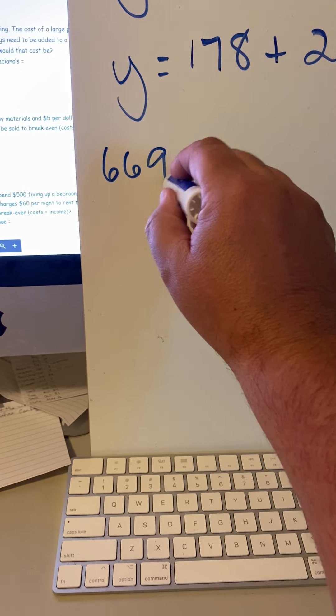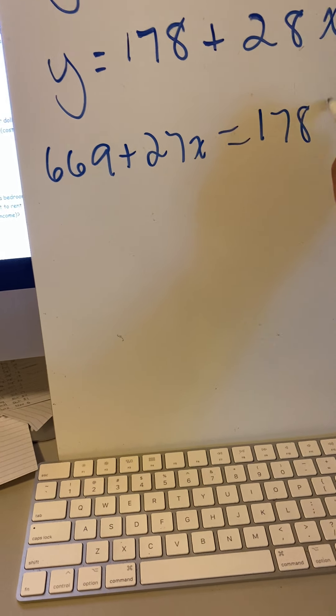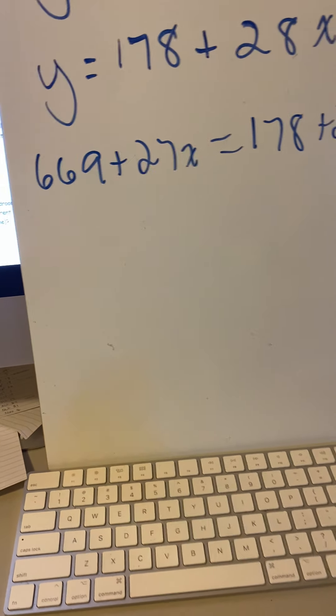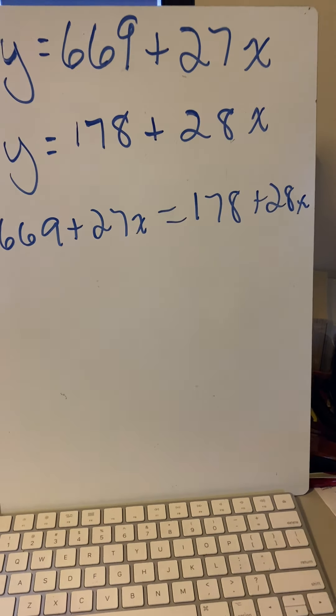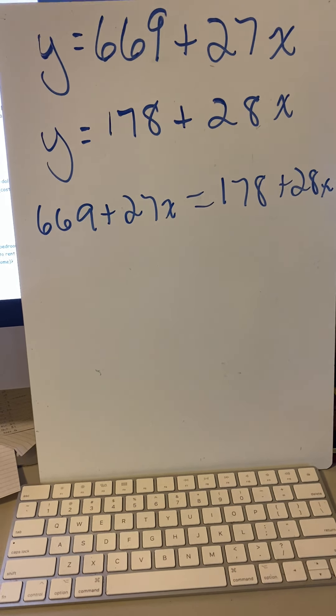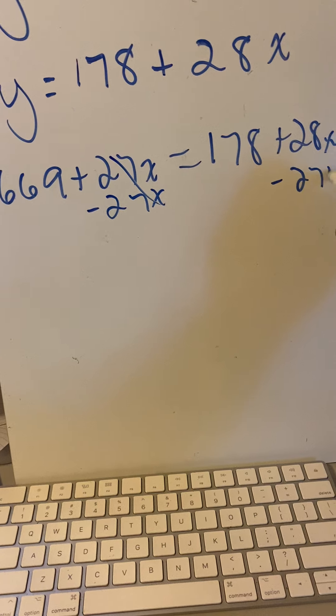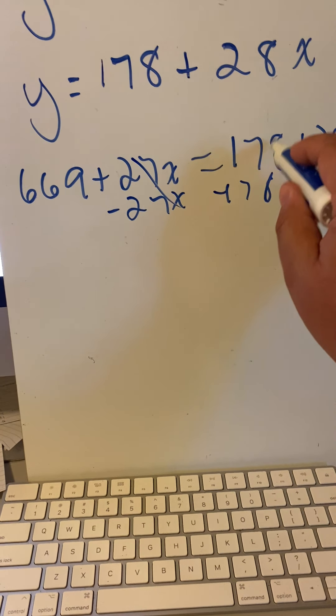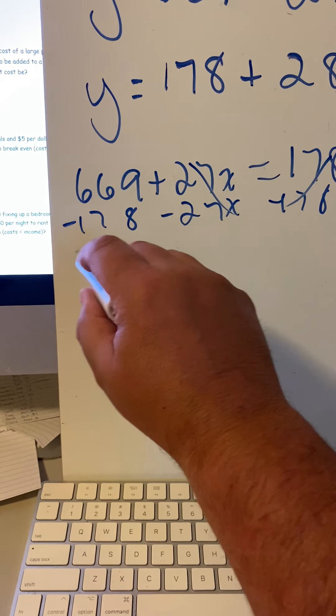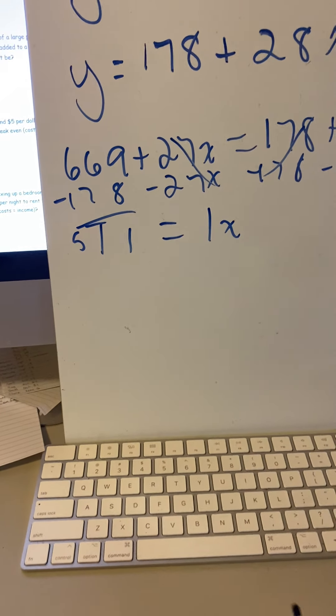So you've got 669 plus 27X is equal to 178 plus 28X. I would choose this simply because it's now a two-step equation. Subtract the 27X, subtract the 178, and you're done.